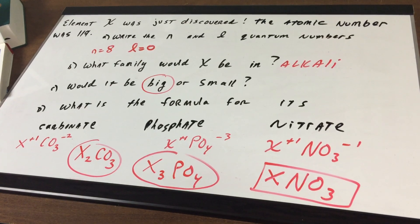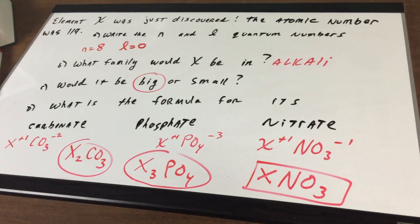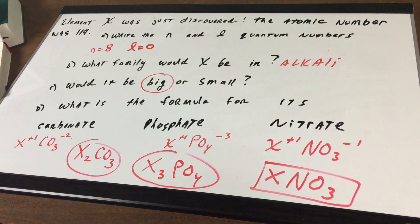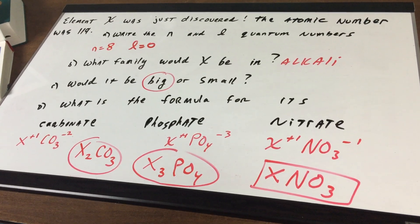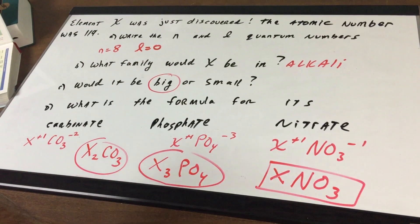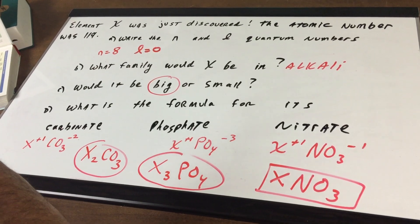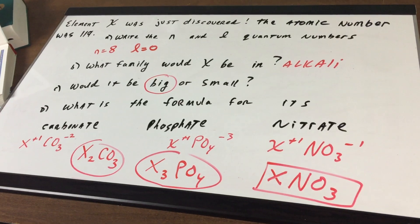And finally, ionization energy, which is the energy required to remove the most loosely held electron in the gas phase of the atom, will be increasing as you're going across the table and decreasing down a group.